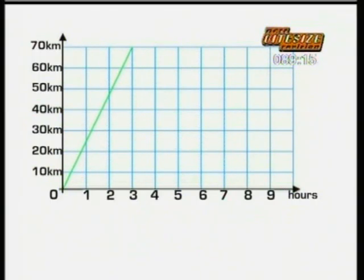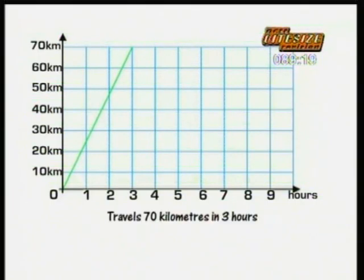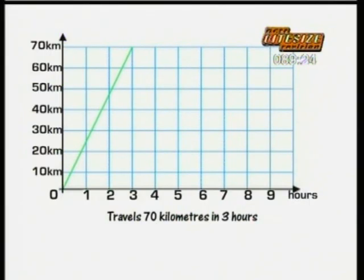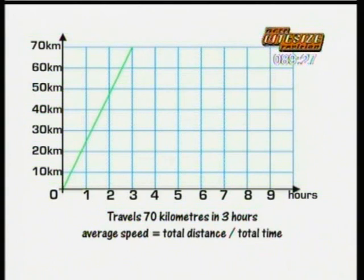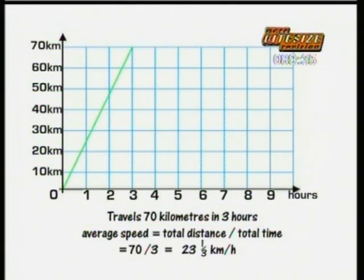How did you get on? The green cyclist sets off at a constant speed and covers 70 kilometres in three hours. The average speed for the journey is the distance divided by the time — speed is in kilometres per hour. So that's 70 divided by three: 23 and a third kilometres an hour.